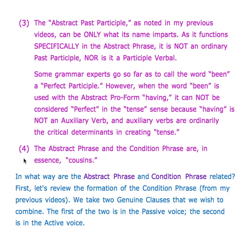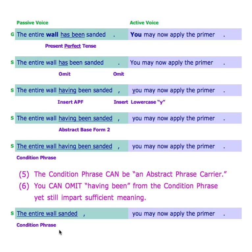Point four: the abstract phrase and the condition phrase are in essence cousins. Let's look at how they're related. First, reviewing the formation of the condition phrase: we take two genuine clauses we wish to combine. The first of the two is in the passive voice; the second is in the active voice.